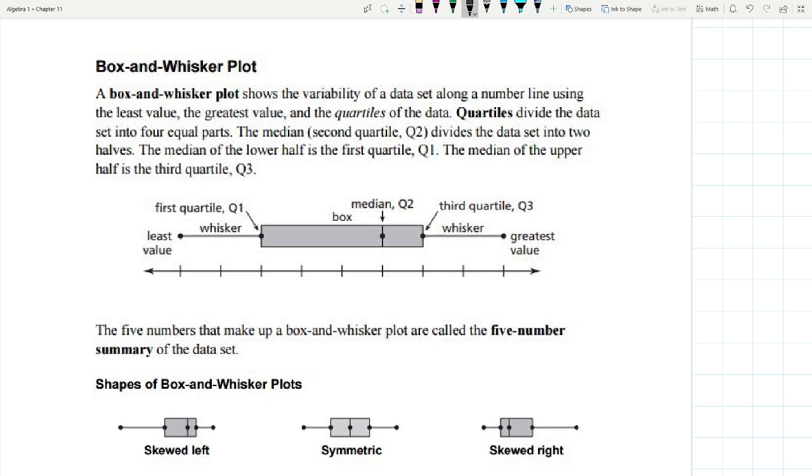Today we're going to be learning about box and whisker plots. Box and whisker plots, as you can read, shows a variability of a data set along a number line using least value, greatest value, and the quartiles of the data.